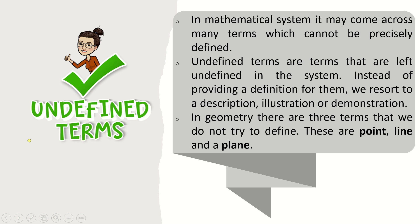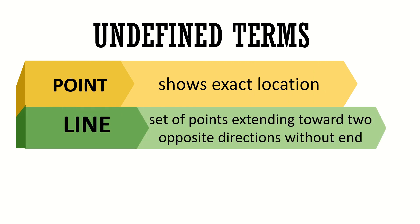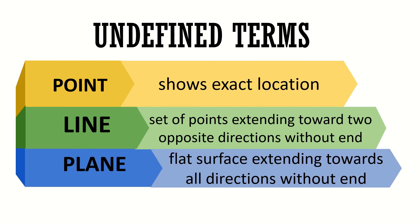The three undefined terms in geometry are point, line, and the plane. They are usually readily understood but are not formally explained using basic words since they will lead to circularity — meaning you have just circled back to any word previously being defined or to the original word. A point shows the exact location. A line is a set of points extending toward two opposite directions without end. And the plane is a flat surface extending toward all directions without end.